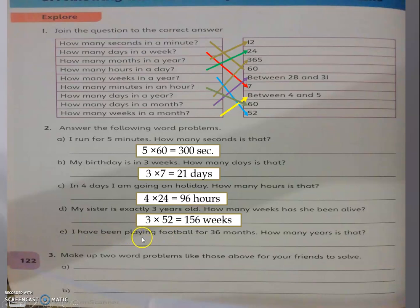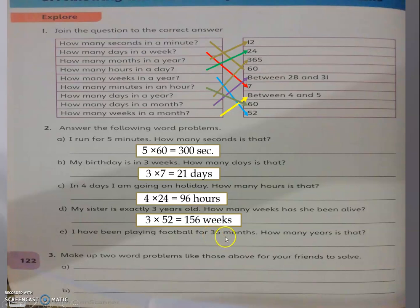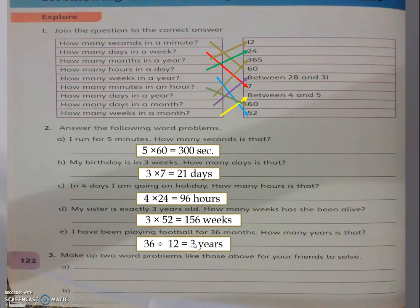Question 2E: I have been playing football for 36 months. How many years is that? Converting from months to years — small to big — so I divide. I have 36 divided by 12, because 12 months make 1 year. What times 12 makes 36? 3. So 36 months equals 3 years.